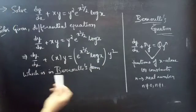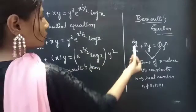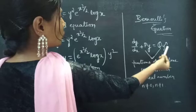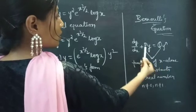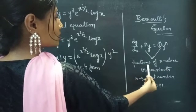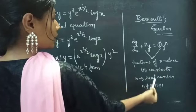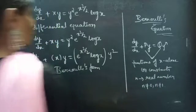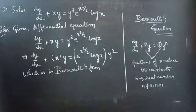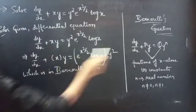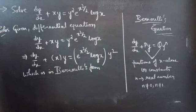We know that Bernoulli's equation is of the form dy/dx plus P into y equals Q into y^n, where P and Q are either functions of x alone or constants, and n is a real number such that n ≠ 0 and n ≠ 1. By comparing these two equations, we can say that we are given a Bernoulli's equation.